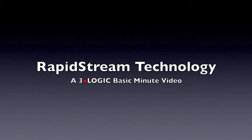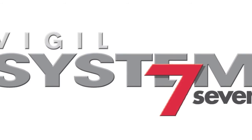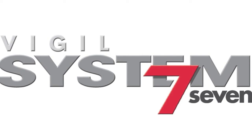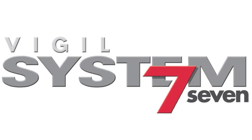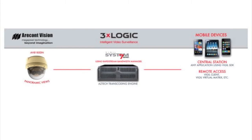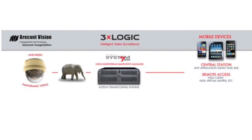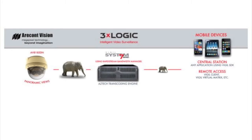Today we're going to be taking a look at one of the newest features for Vigil System 7. This is called Rapid Streaming. This is a really unique feature to the Vigil System 7 software that allows you to essentially take a really large file size and compress it down to a more manageable stream.